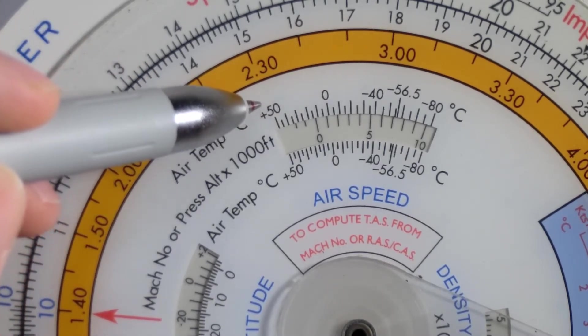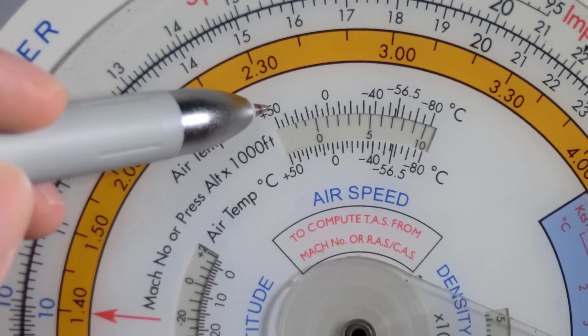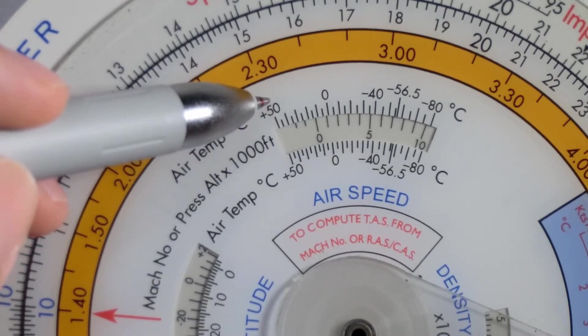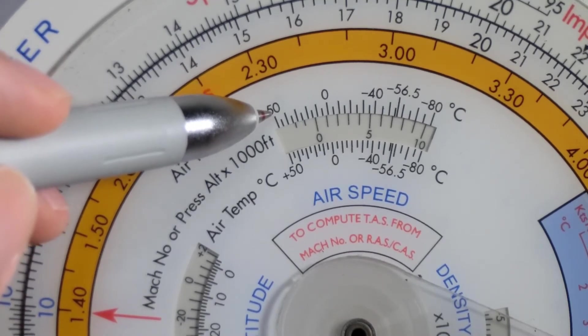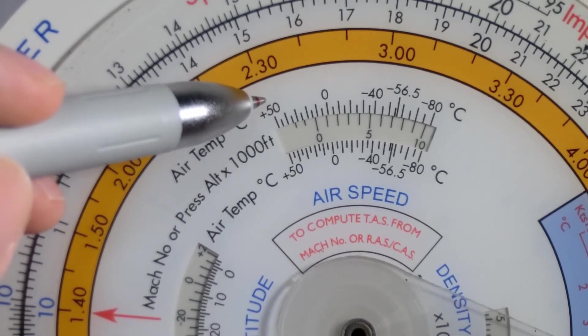And the corrected outside air temperature is basically the temperature that's corrected for things like ram rise, the rise in temperature due to the speed of the aircraft. So correction tables would be found on the aircraft that you can use to offset the ram rise.